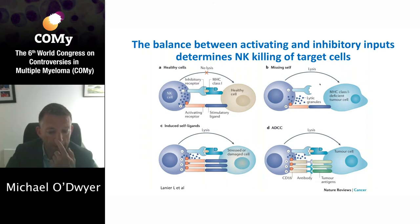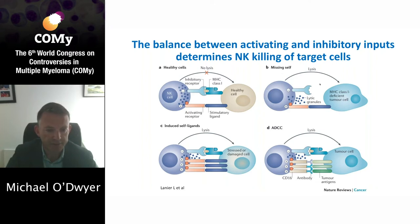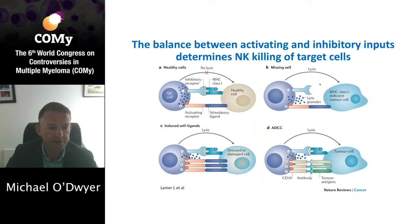As NK cells mature, engagement of inhibitory receptors by MHC class 1 molecules is thought to be important for optimal effector function, and this is referred to as NK education or licensing. On the other hand, if you look at the bottom left, under conditions of cellular stress, such as malignant transformation or following exposure to chemotherapeutic agents, increased expression of ligands for NK cells can induce sufficient activation to override inhibitory signals.